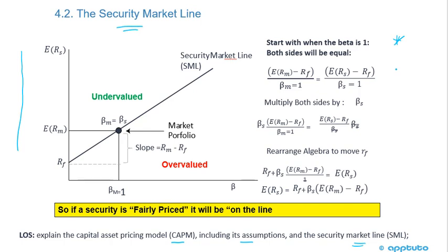We have a graph here on the left-hand side and a little bit of algebra on the right-hand side. On the y-axis, we have the expected return of the security. But on the x-axis, we now have beta. Remember, on the capital allocation line from a previous LOS, the x-axis had risk noted as standard deviation. So one key difference between the capital allocation line and the security market line is that on the SML, we have beta on the x-axis.